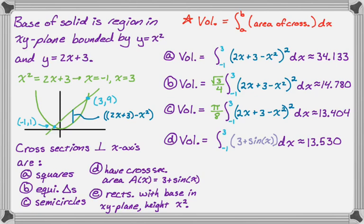So the base is in the xy-plane, so the base is going to be that segment we drew, so 2x plus 3 minus x squared. And then the height is x squared, and the area of a rectangle is base times height. So our volume is still going from negative 1 to 3. The base is the quantity 2x plus 3 minus x squared. The height, we're told, is x squared.